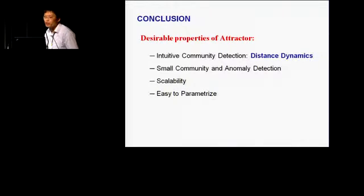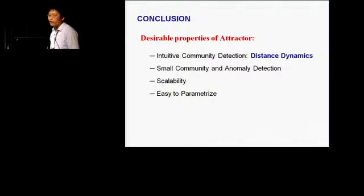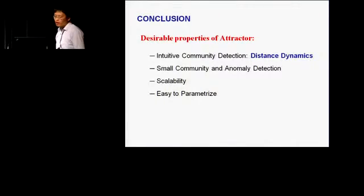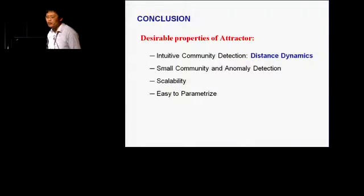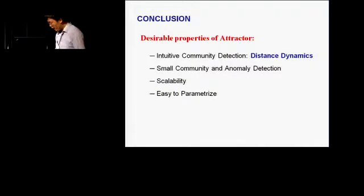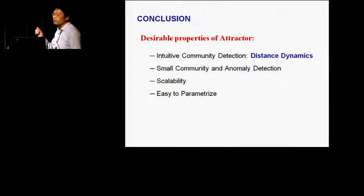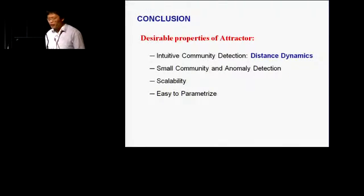In conclusion, we introduced a new community detection algorithm from a new viewpoint: distance dynamics. Our algorithm allows detecting small communities and outliers, and it is scalable. Finally, our algorithm does not need to specify the number of communities, only the cohesion parameter lambda, which is quite intuitive to specify.